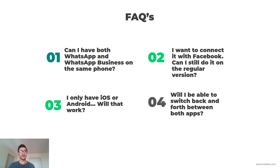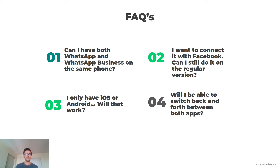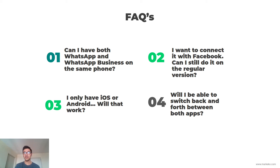I only have iOS or Android — will that work? Yes it would. It doesn't matter if you have an iPhone or a Samsung phone, it'll work anyway. The operating system doesn't really affect your usage of WhatsApp Business. Before it did, but now iOS has support for WhatsApp Business, so everything's good.